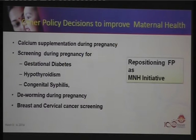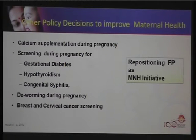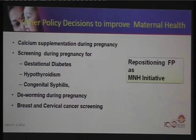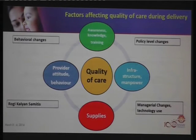Other policy decisions being implemented to improve maternal health include: calcium supplementation during pregnancy; screening for gestational diabetes, hypothyroidism, and congenital syphilis; deworming during pregnancy for anaemia; and breast and cervical cancer screening. Most importantly, family planning is being repositioned as a maternal and newborn health initiative rather than a population reduction measure, with two new contraceptives added to the program — the injectable contraceptive DMPA and the progesterone-only pill for lactating mothers — expanding the basket of choices.